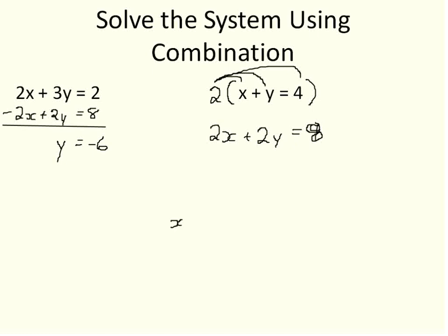I'm going to use this x plus y equals 4 equation, because that one seems easy. x plus negative 6 is equal to 4, or x minus 6 equals 4. I'm going to add 6 to both sides of the equation, telling me that my x value is equal to 10. y is equal to negative 6, x is equal to 10.